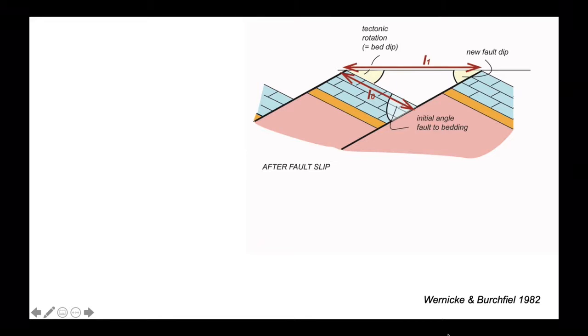So we have some simple angular relationships here and lengths that we can use trigonometrically to evaluate the stretching through these equations. So E, the elongation, is simply the final length minus the original length divided by the original length. That's the E.